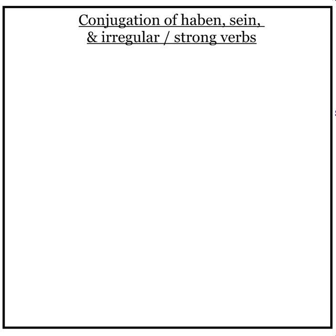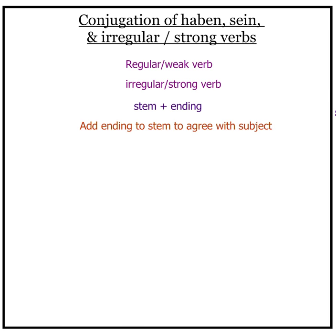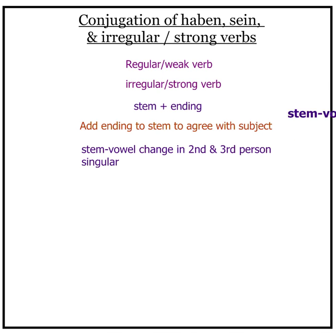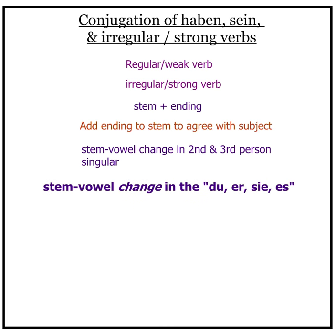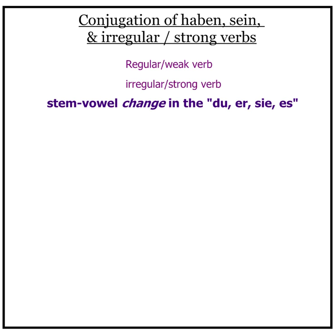So, what's the difference between a regular or weak verb and an irregular or strong verb? To conjugate a regular verb, you add the appropriate ending to the stem, depending on what you're conjugating the verb to — that is, the subject of the sentence. Our definition of an irregular verb is a verb with a stem vowel change in the second and third person singular. Every verb is made up of a stem plus an ending.